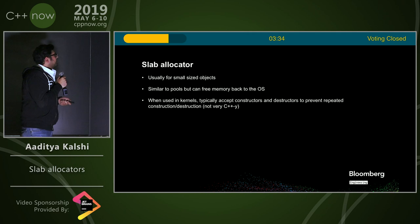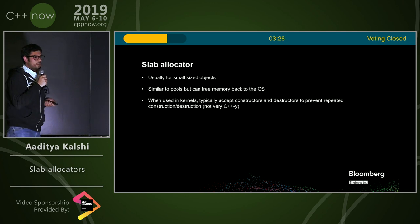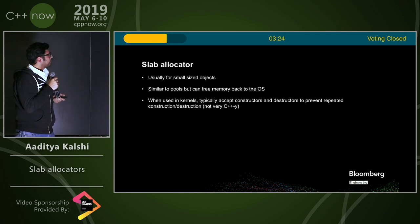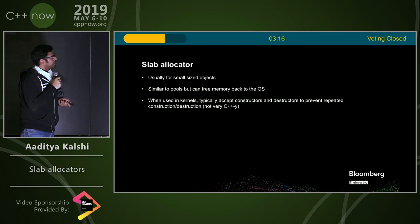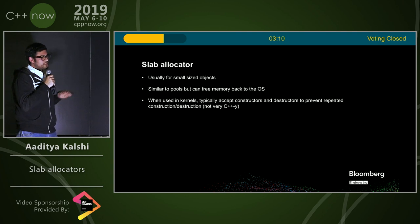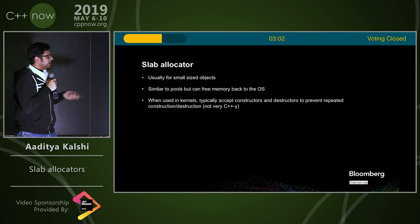The allocator I'm interested in is the slab allocator. There was a paper on USENIX by Jeff Bonwick that detailed this much more than I'm going to cover here — please check that out. It's usually for small-sized objects. It's similar to pools, but the difference is that slabs can naturally free memory back to the OS. When used in kernels, they typically come with constructor and destructor functions for object caching, but that's not very C++-y so I won't go into that.